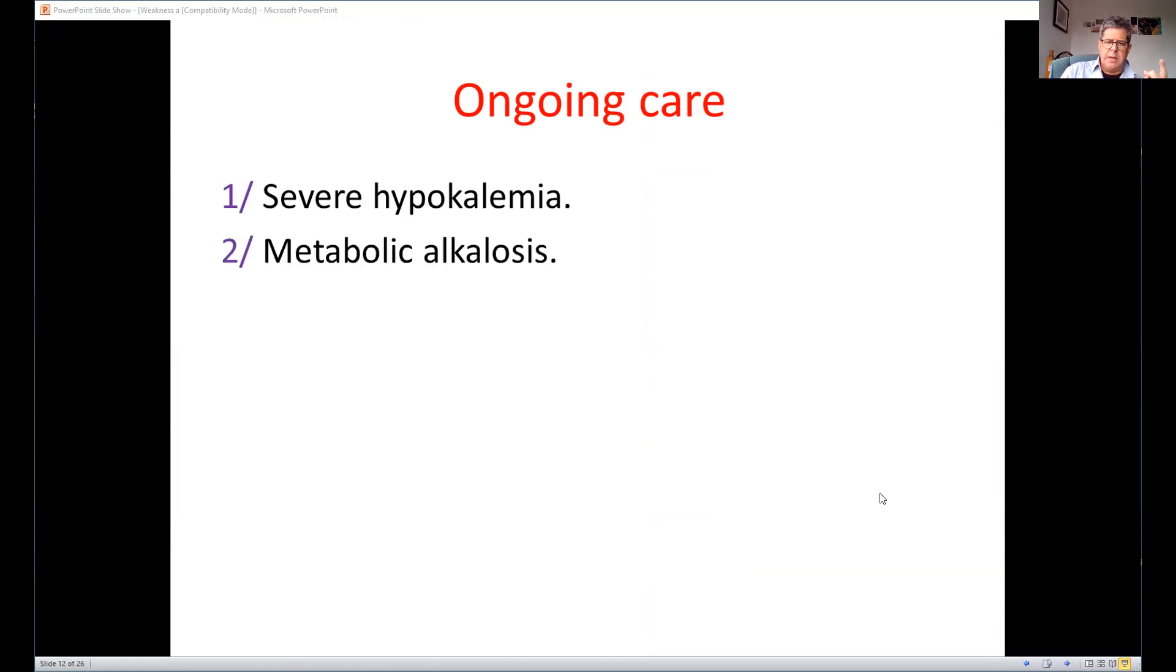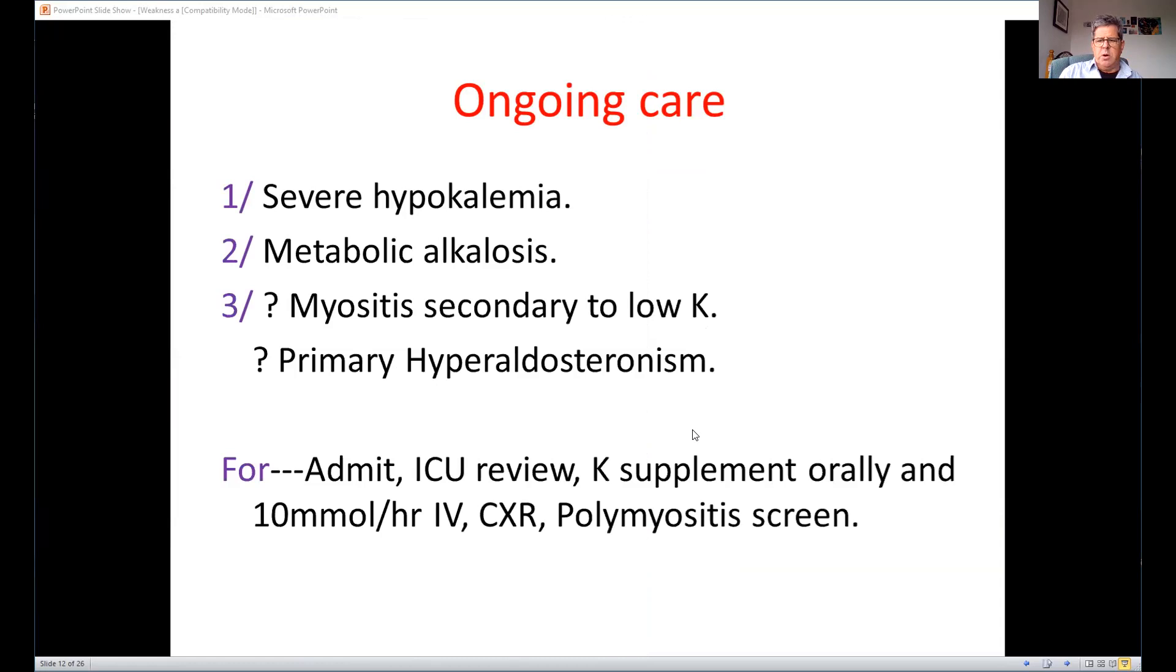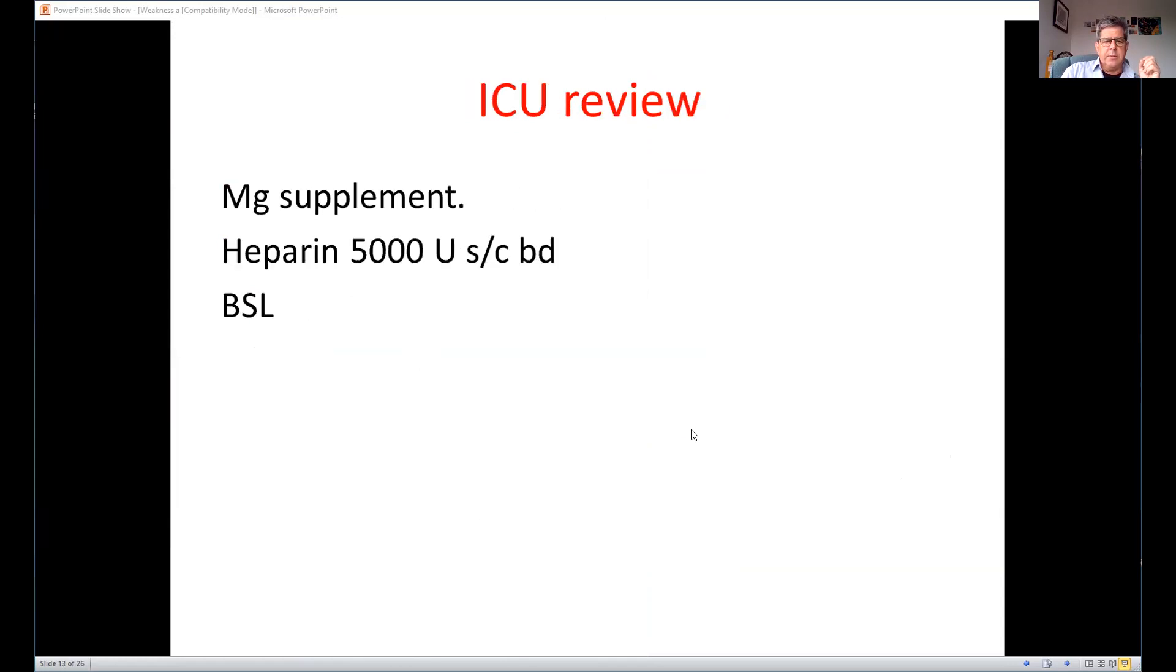So they asked for some review by general medicine and by renal. The nurse looked at the severe hypokalemia and metabolic alkalosis and thought, well, the sodium was a bit up and they were hypertensive. Maybe it's primary hyperaldosteronism or maybe we're seeing myositis. So let's give them some oral and intravenous potassium replacement, get ICU to look at them. They can do a polymyositis screen, which I'm not even sure what you do for that. ENAs, ANAs, I'm not too sure, and see how they go from there.